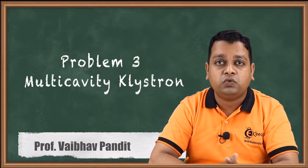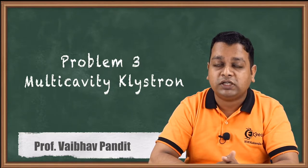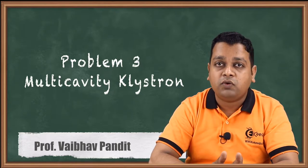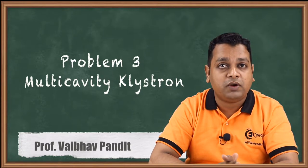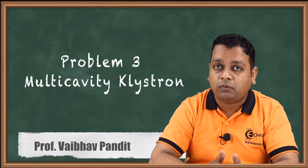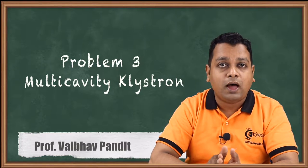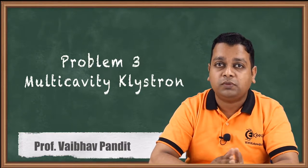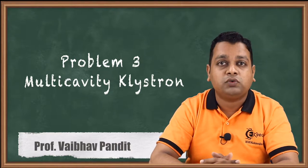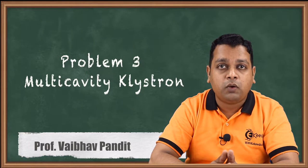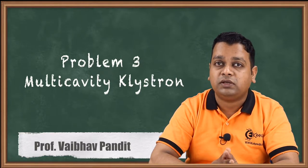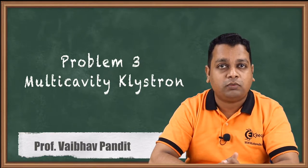The very popular 2-cavity klystron we have covered. We have seen the velocity modulation as principle of operation, derived few of the parameters with respect to the performance of 2-cavity klystron, and solved few problems. To achieve higher gain, we shifted from 2-cavity klystron to multi-cavity klystron and also solved 2 problems. With respect to the output power and output current seen in the previous video, let us solve problem number 3.